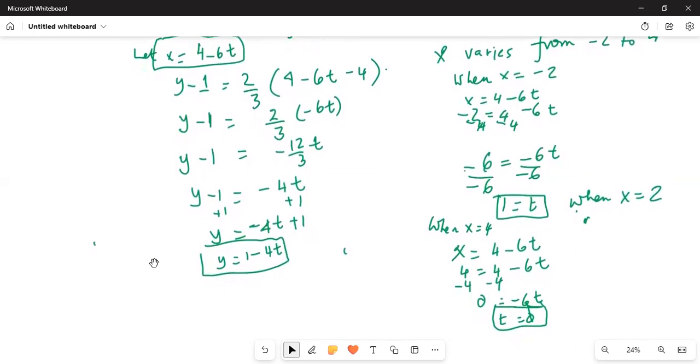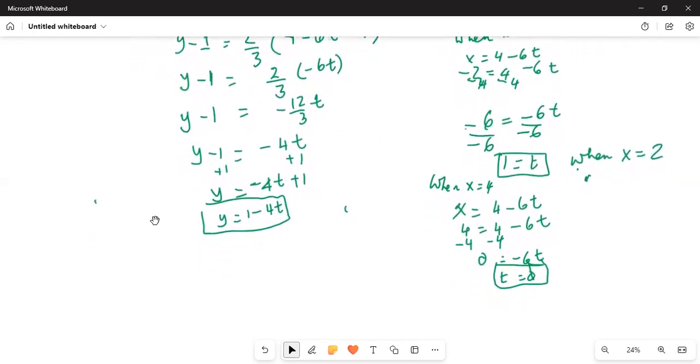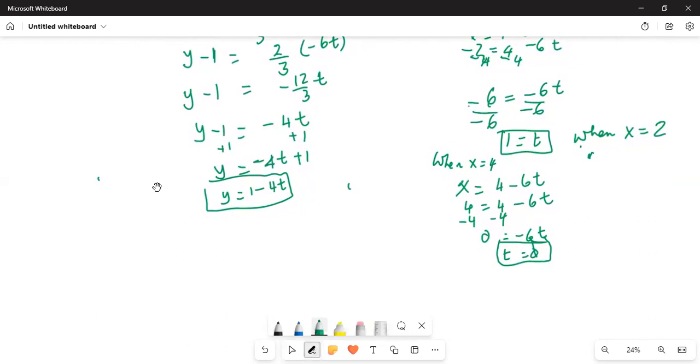The parametric equations are x equal to 4 minus 6t and y equal to 1 minus 4t.